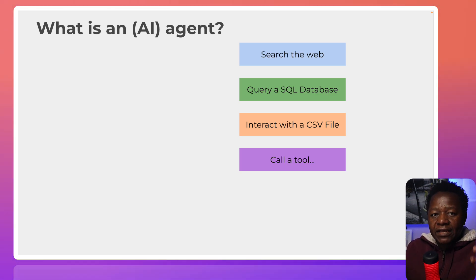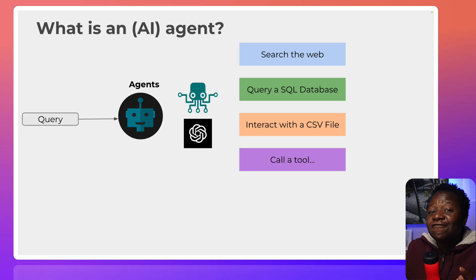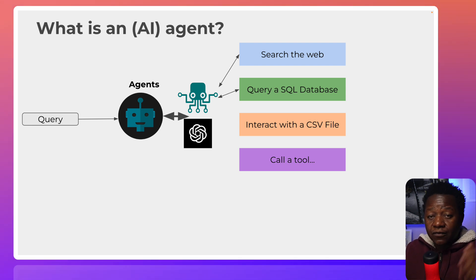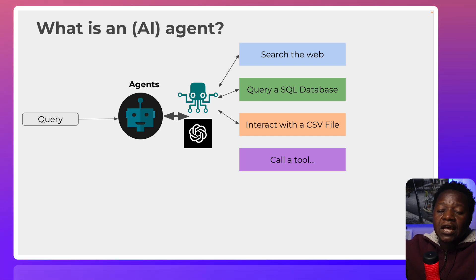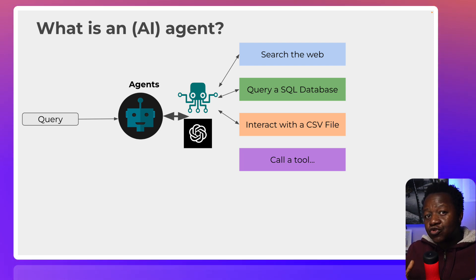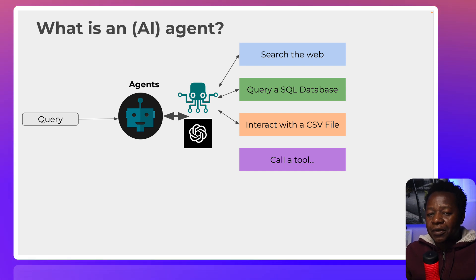Agents have many ways of working. The agent is able to work with a large language model and invoke tools. For instance, the tool could be to search the web to find the right answer, query a SQL database (local or remote), interact with a CSV or PDF file, or even call an external API. Agents are really great because now they're able to go out and do things on behalf of the large language model — on our behalf.